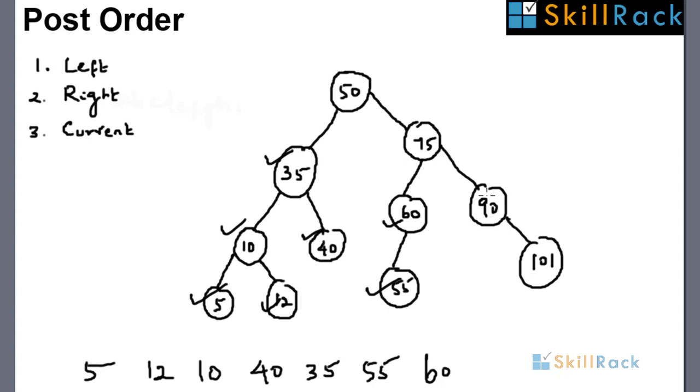75 has a right part, so we come to 90. 90 does not have a left but has a right. So we print 101. Then we come back to 90 and print 90.